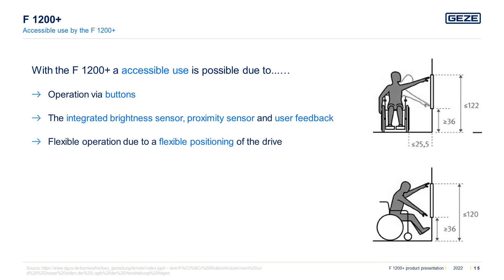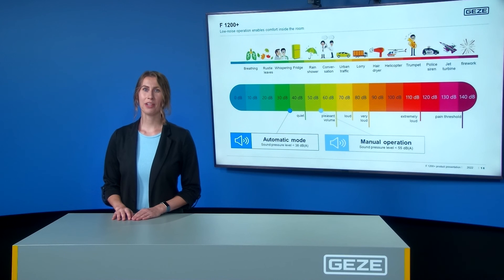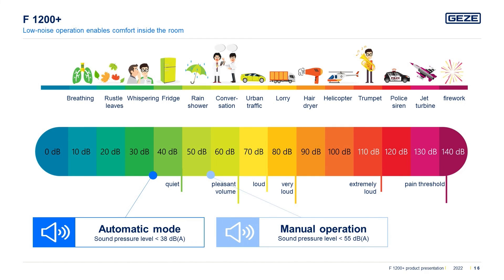Another feature of the F1200 Plus is that it is very quiet, keeping the room comfortable during use. Especially in automatic mode, the noise level is comparable to the quiet hum of a fridge or a whisper between two people. Manual operation is also perceived as pleasant. This low noise level is especially advantageous in offices, where people continue to be supplied with fresh air, the room remains comfortable, and productivity is maintained.